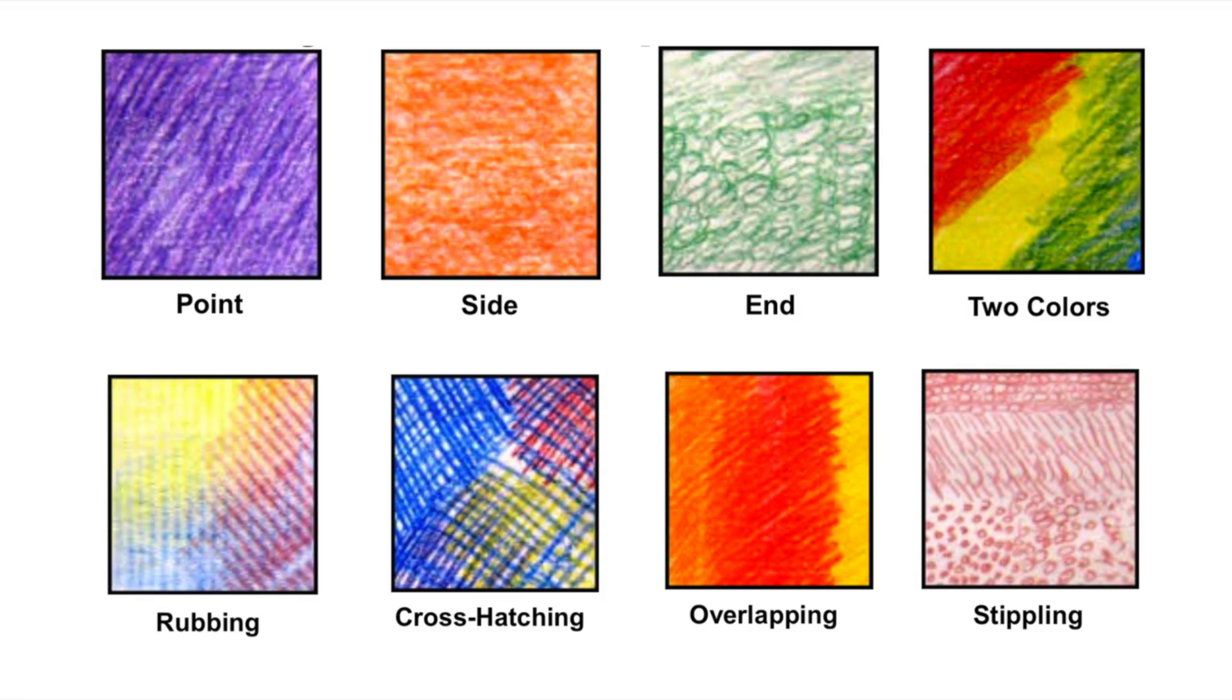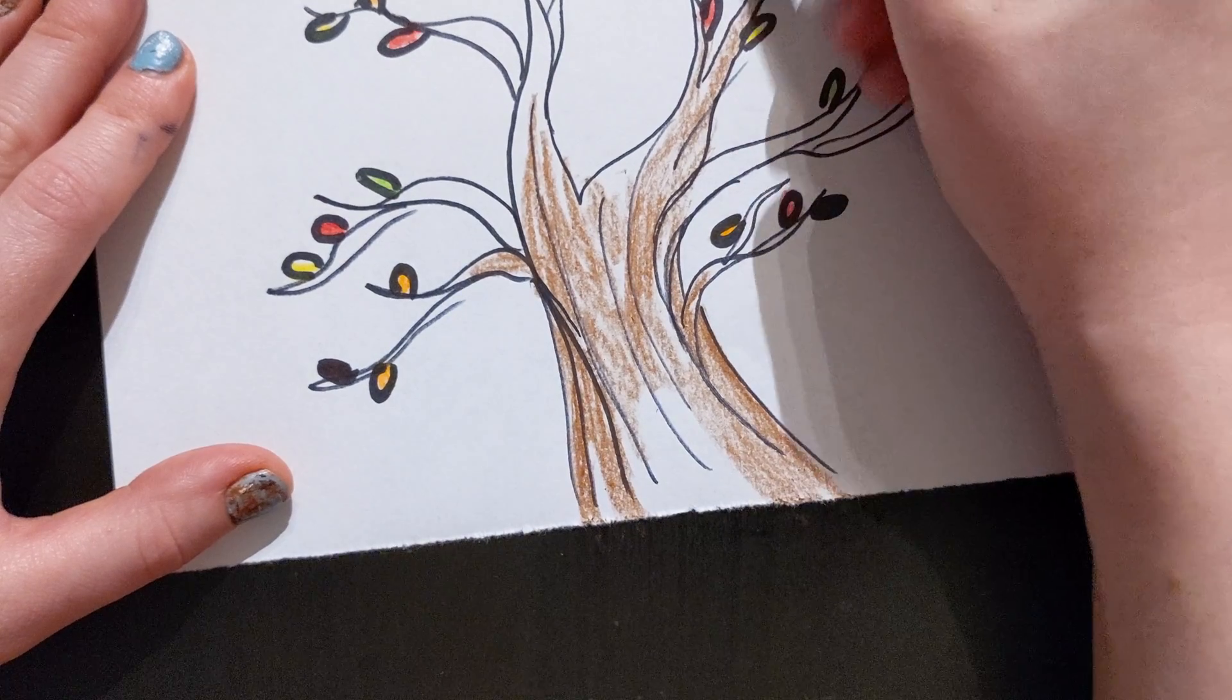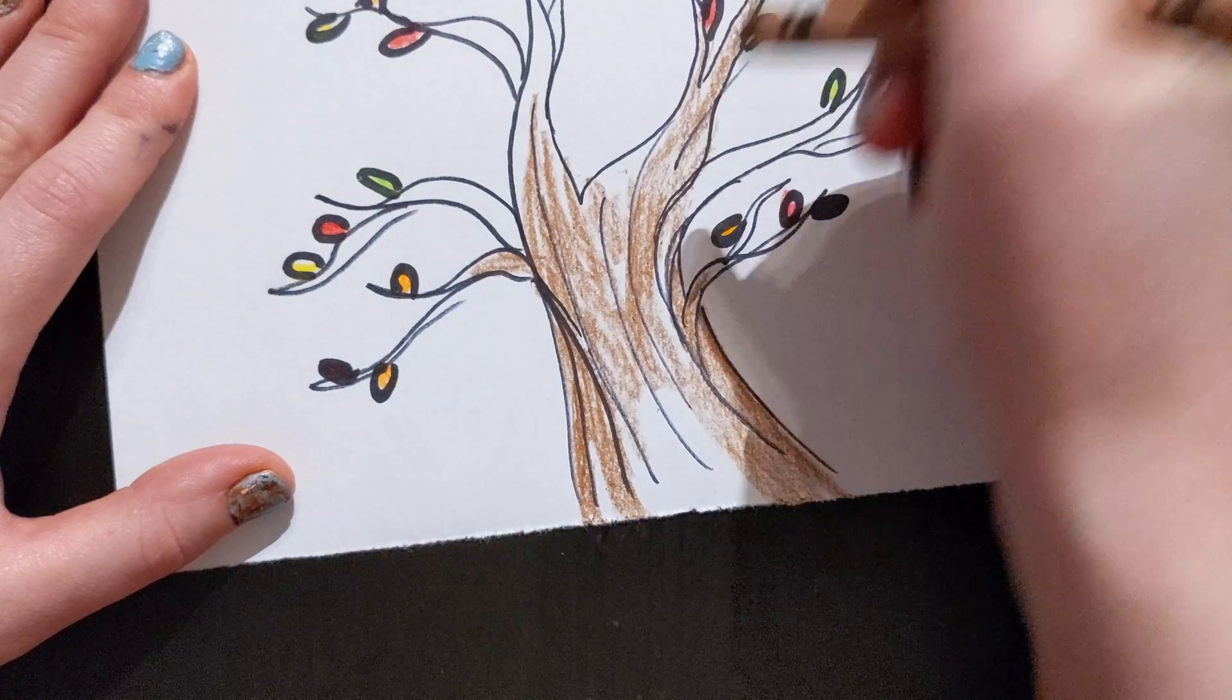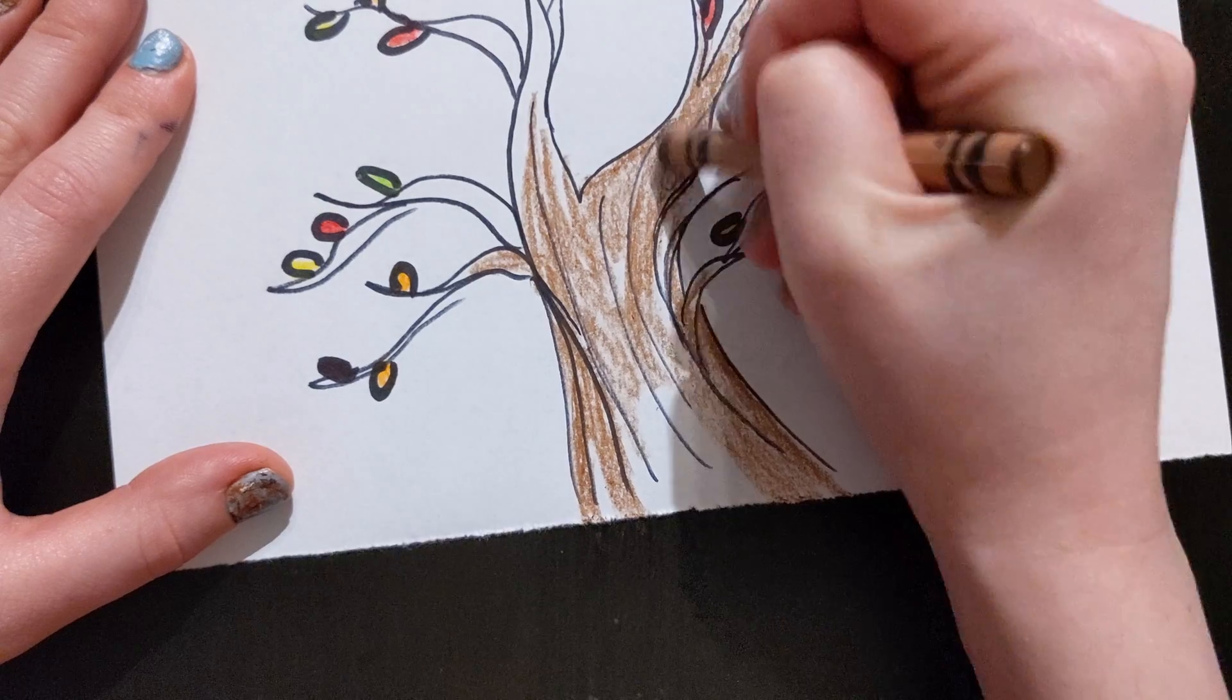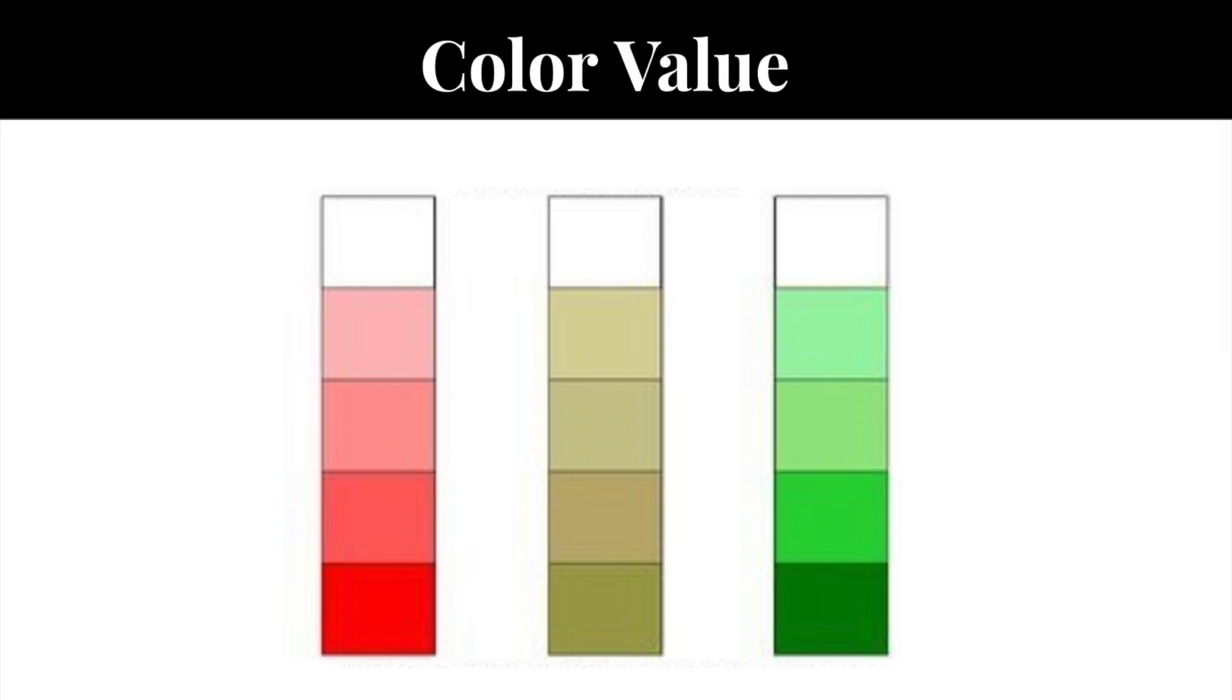I think the one I like the most with the trees is when I color a little bit darker on the edges, but then lightly on the inside. That way I get kind of a change of color value without switching crayons or anything like that.